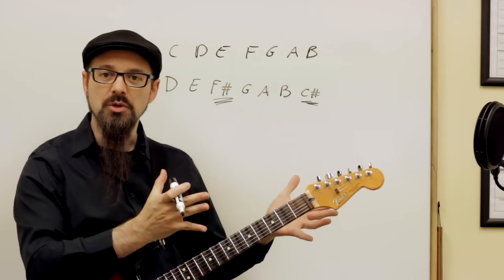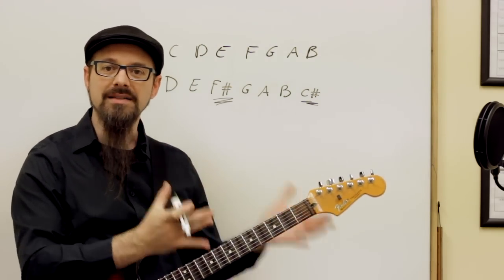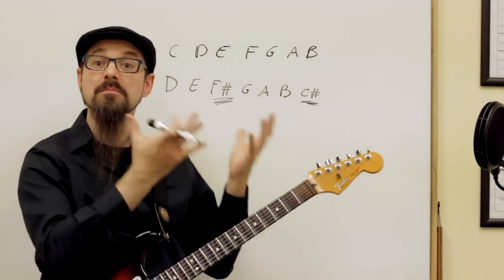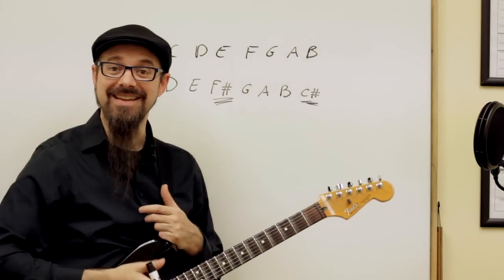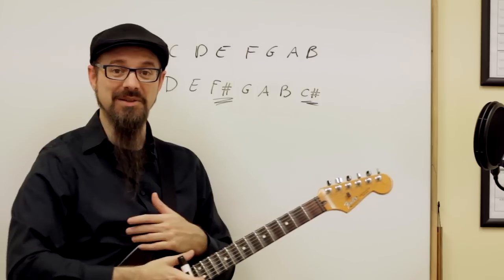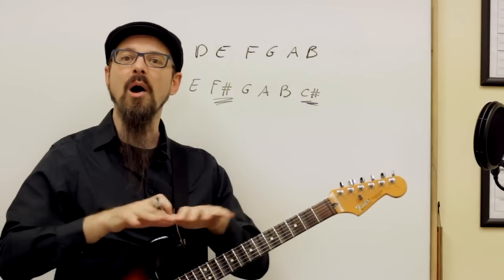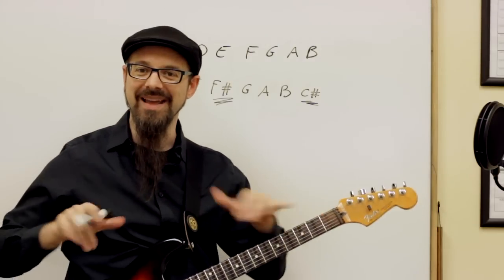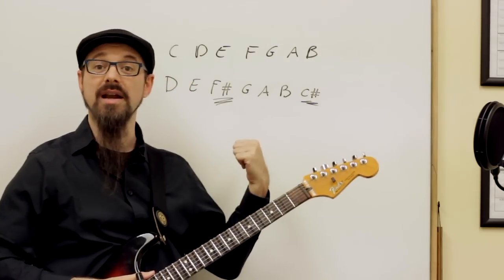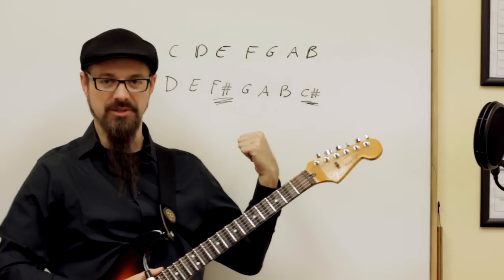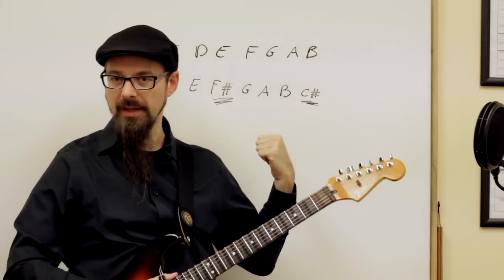Function one tells you what the basic notes are in that key — where your home is. Those are the home notes of that key.